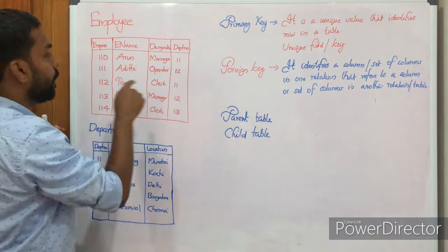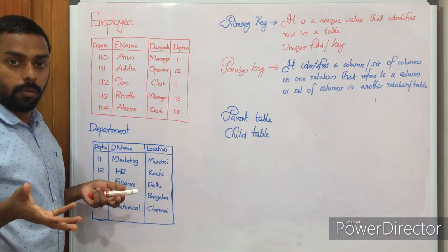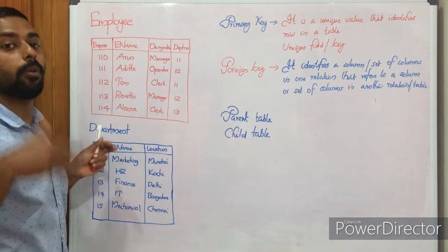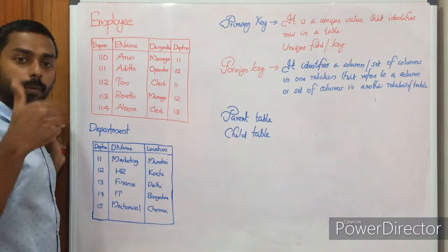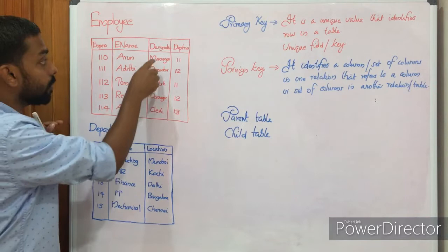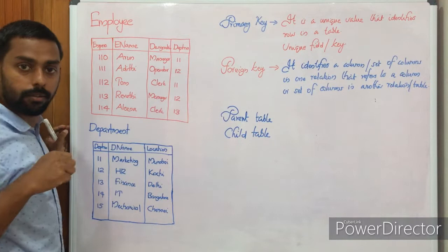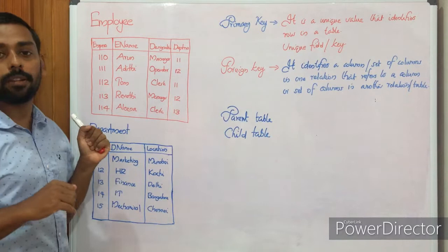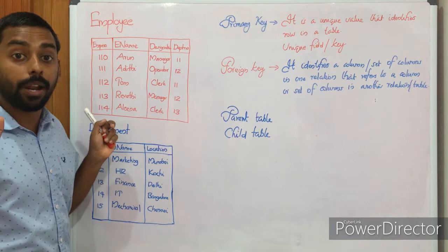There must not be any duplication in a primary key. In Employee, employee number is a unique field. You can have duplicate names — for example, you may have two employees named Arun. You can see designation 'manager' repeated twice, and department number 11 repeated. But there must not be any duplication in employee number. When you set employee number as primary key, there must not be any duplication.